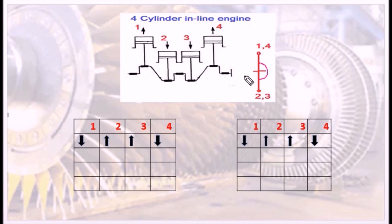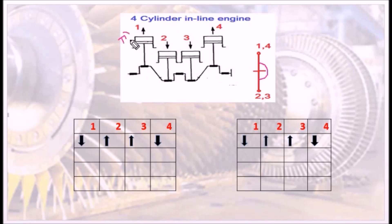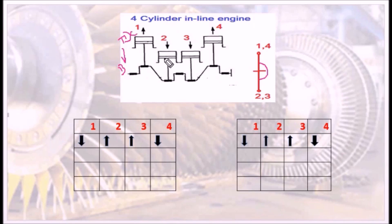In this crank configuration, we need to determine what type of firing order to select. There are four cylinders. Cylinders one and four are at TDC (Top Dead Centre) while cylinders two and three are at BDC (Bottom Dead Centre). We now have two choices for the firing order.